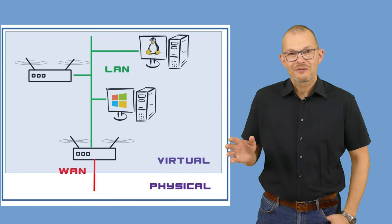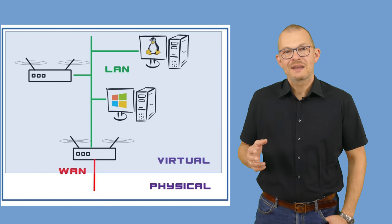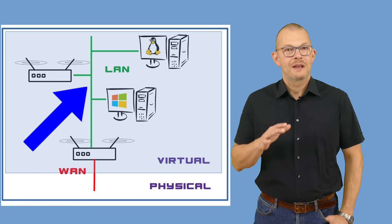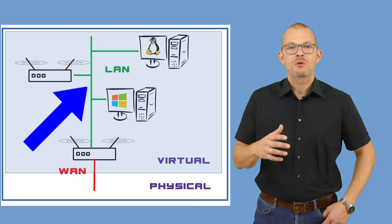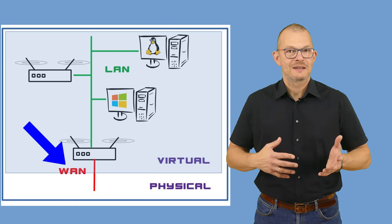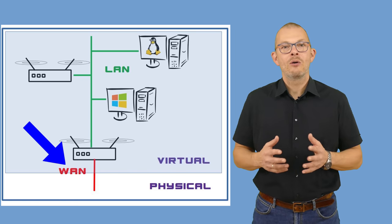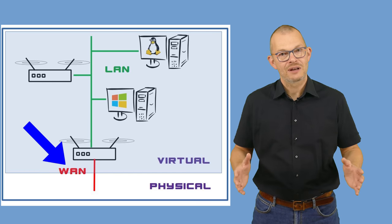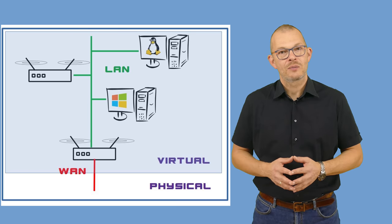If you look at the diagram, you can see that we want two networks – the LAN, our internal network, and the WAN, the internet. All this will happen inside the virtual environment, inside VirtualBox. Let me show in the next ScreenCam lab how to configure the networks in VirtualBox.